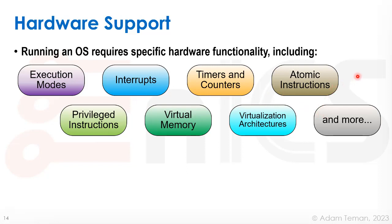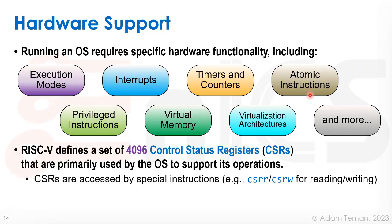Since we've been discussing RISC-V as a basic computer architecture for this class, it defines a set of what we call Control Status Registers. There are 4096 of them defined in the RISC-V spec — we call them CSRs. They are primarily used by operating systems to support their operations. We have some of them even when we're not running an operating system, but most of them are really there to support the operating system. The CSRs are accessed by special instructions.